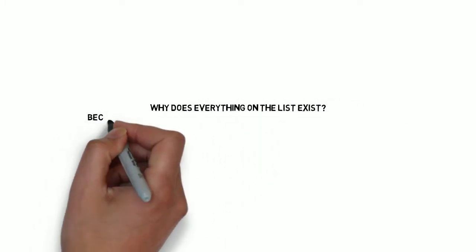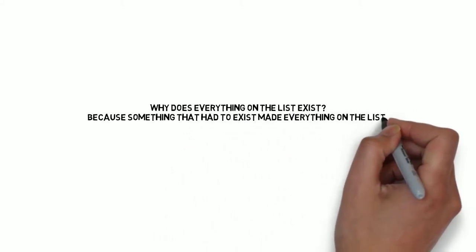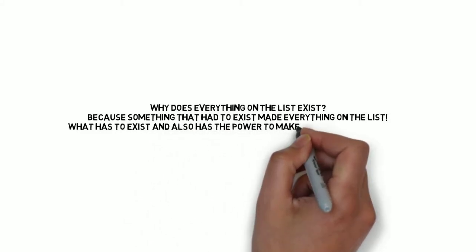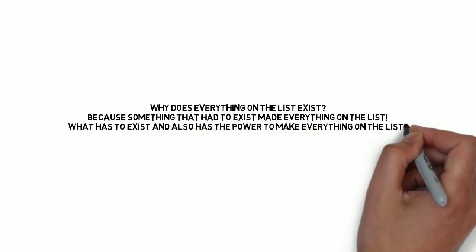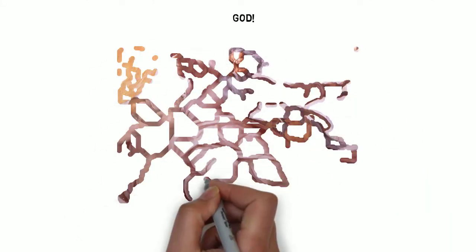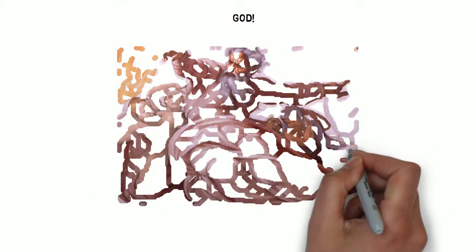The Cosmological Argument answers, well, there's something that had to exist and it made everything else. So the Cosmological Argument comes to the conclusion that the only thing which would have had to exist and which was capable of making everything else which didn't have to exist is God. In other words, God is necessary and he made all the contingent things. He made all the maybes.